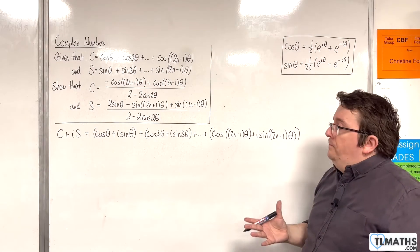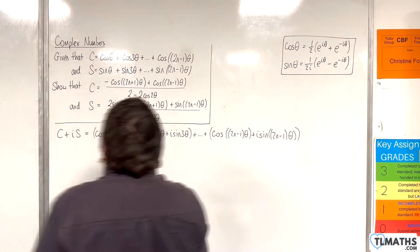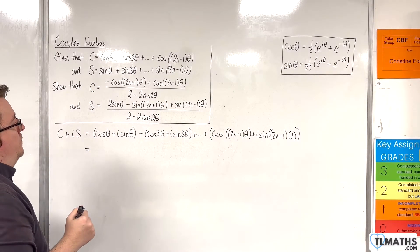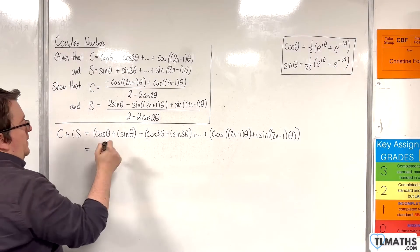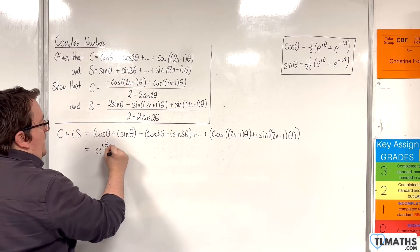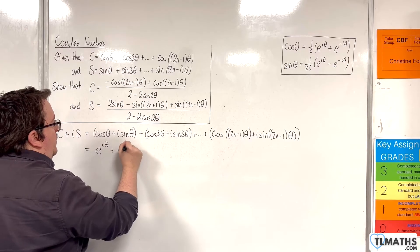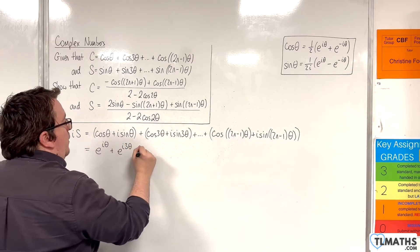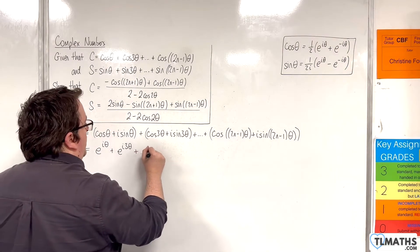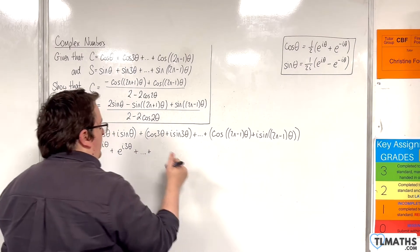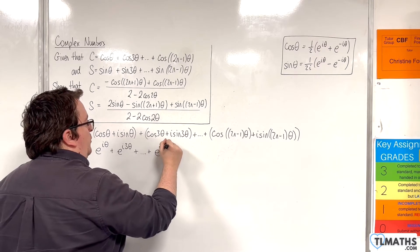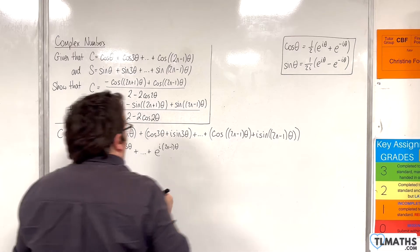From that we can write each grouped term in exponential form: e^(iθ) + e^(i3θ) + e^(i5θ) + e^(i7θ) + … + e^(i(2n−1)θ). So we have a sum to n terms here.